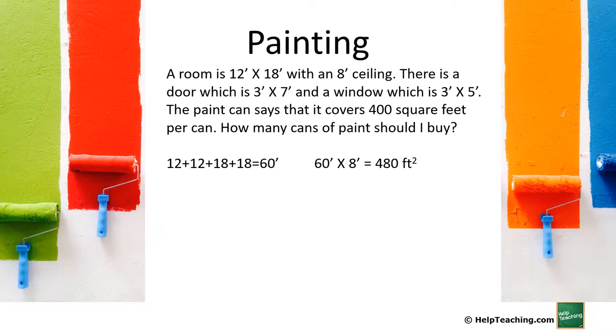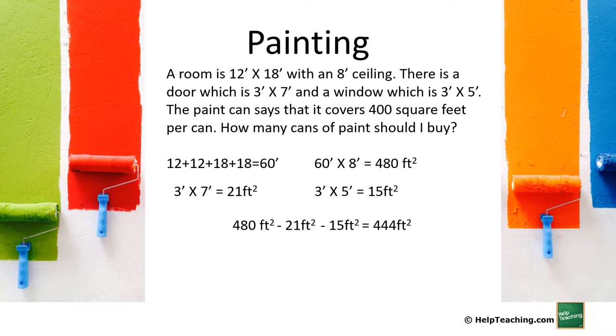Now we're going to calculate the door. 3 feet times 7 feet is 21 square feet. 3 feet by 5 feet for the window gives us 15 square feet. We subtract those from the 480 and we get 444 square feet for the walls. I'm remembering that each can of paint can only cover 400 square feet and I have 444 square feet to cover. I'll need to buy two cans.